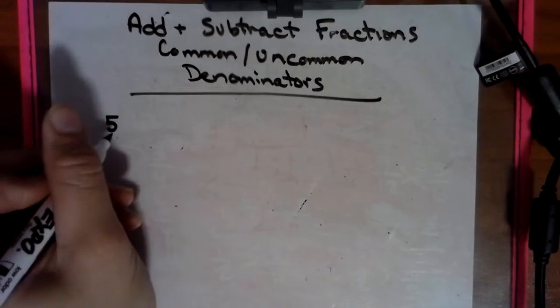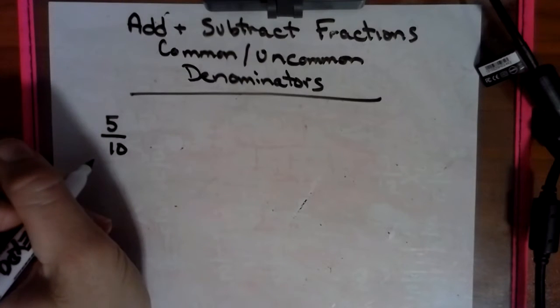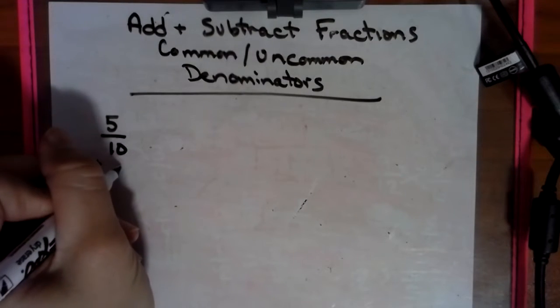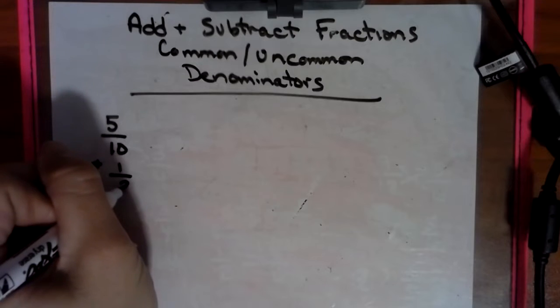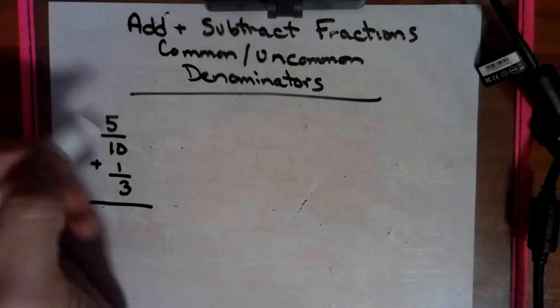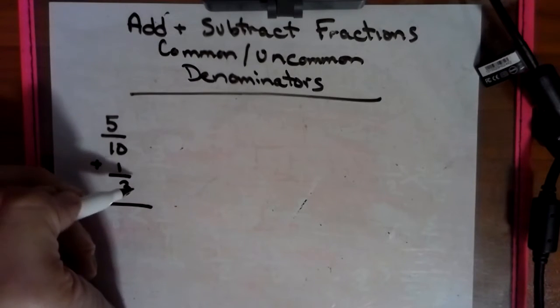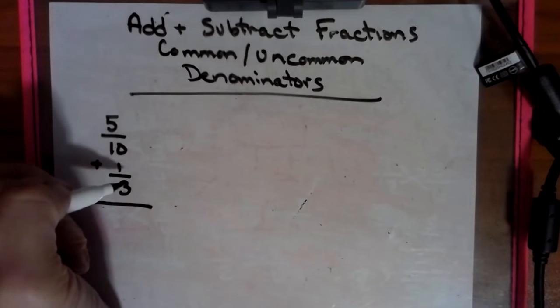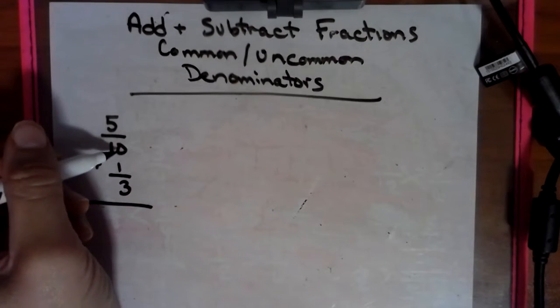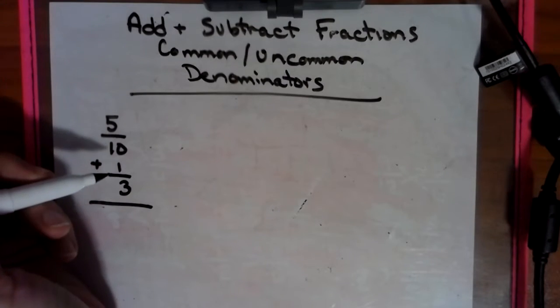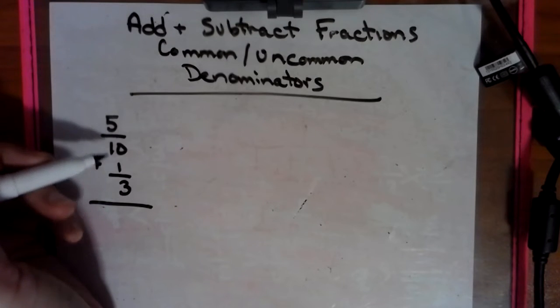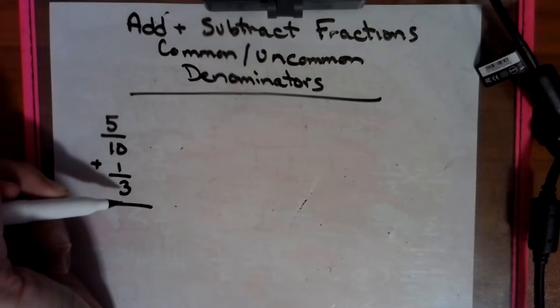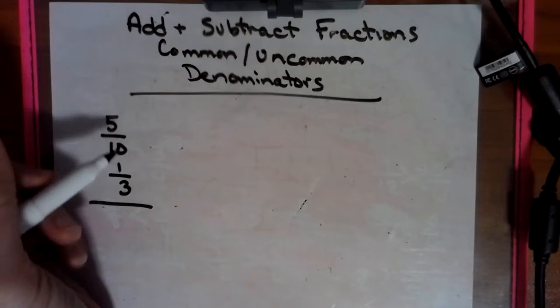I'm going to do like 5 tenths plus 1 third. So we look at this and we have to get a common denominator. We can't go 6 and 13. That doesn't make sense. How do we get from a 3 and a 10 to have something in common? If we count by 3s, we can't land on 10. I always check that first. We can't go 3, 6, 9, 10. It doesn't work.